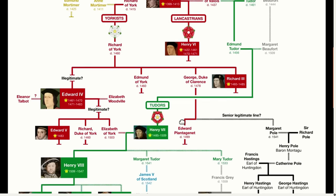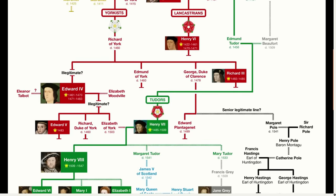With that background, we're now ready to talk about the documentary Britain's Real Monarch. Tony Robinson's theory is based not on the claim that Edward IV's children were illegitimate, but that Edward IV himself was illegitimate. And all of it is based on the timing of Edward IV's birth. Edward IV was born on April 28, 1442 in France while his father was there fighting in the Hundred Years' War.